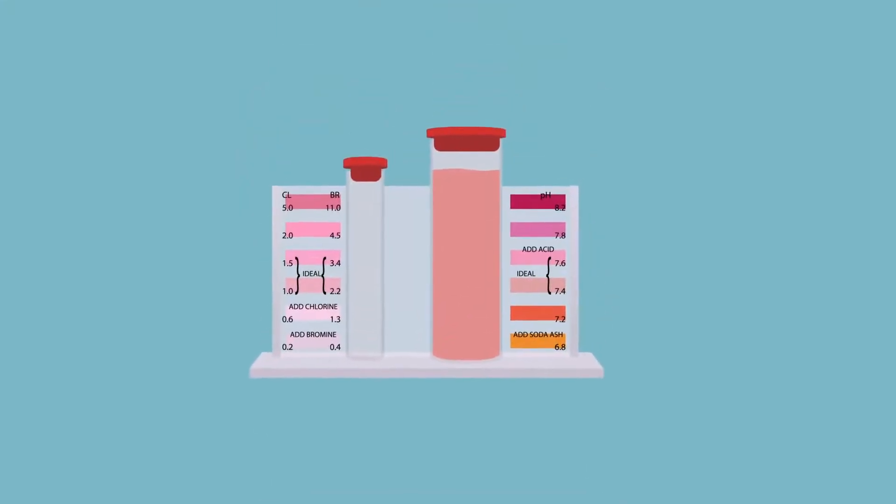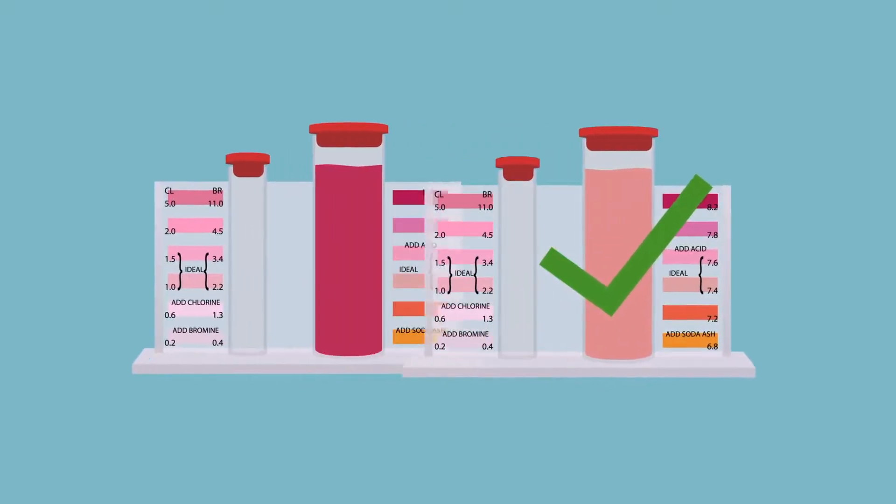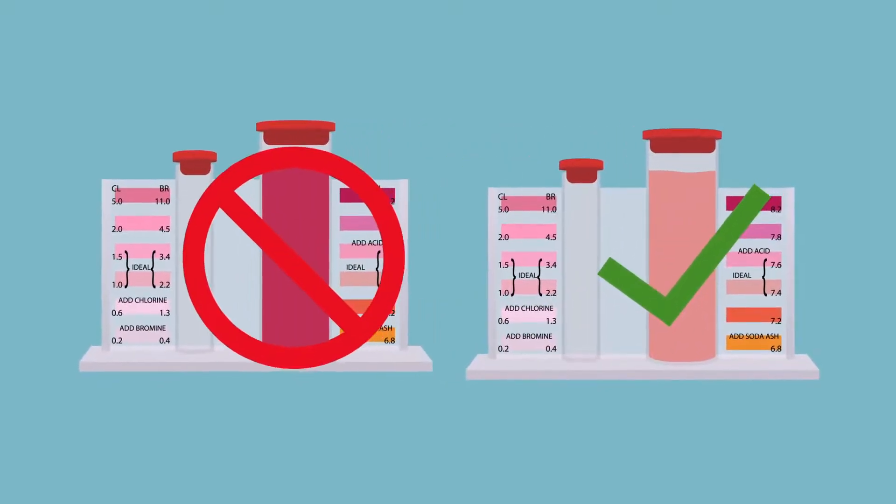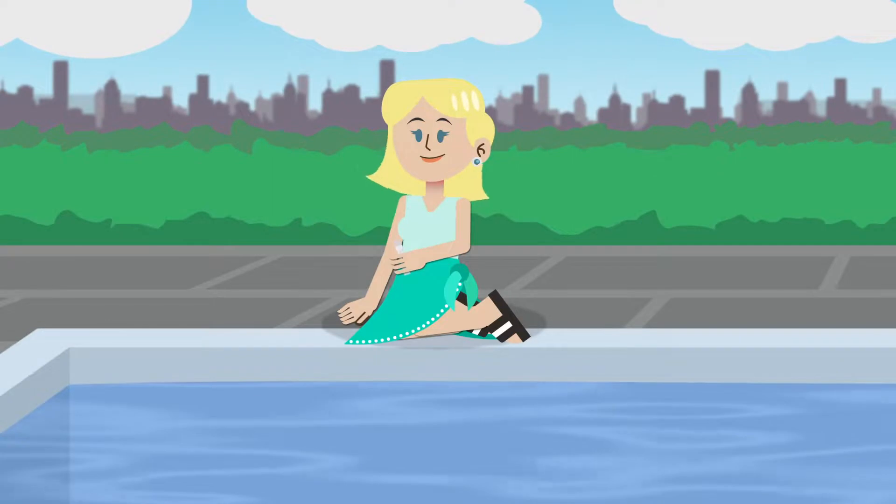Always ensure your pH is correct before testing the copper levels as high pH will mask an accurate reading. To test your pool's copper levels, first ensure that the pH in the pool is correct.